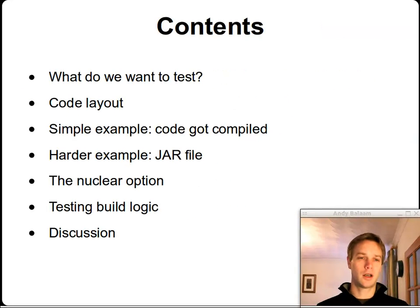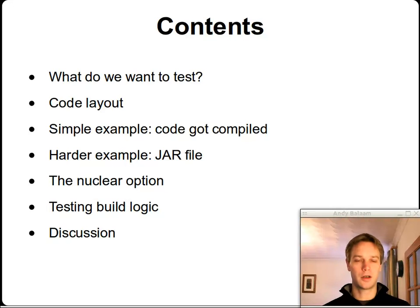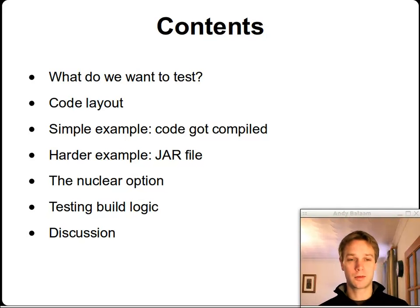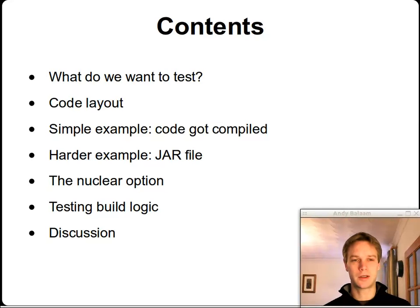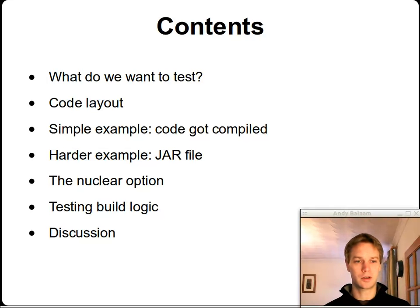So what are we going to talk about? First, what exactly do we want to test when we're testing our Ant code. Then we're going to look at how I'm laying out my code, go through a couple of examples — one fairly straightforward, one a bit harder. Then I'm going to talk about the nuclear option: the way you can make Ant do anything you like. Then we'll have a brief look at some of the harder bits of testing Ant files, including more unit test style stuff that runs faster and is more principled.